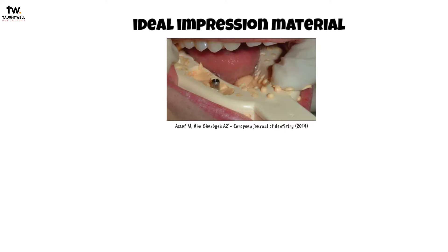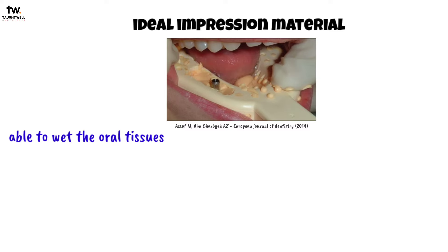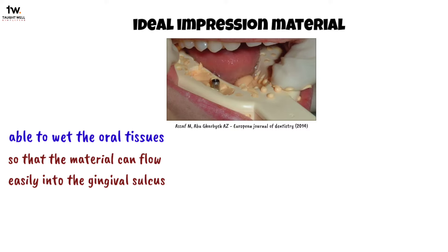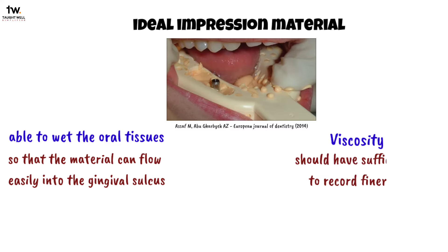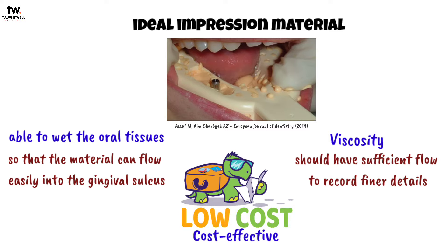The ideal impression material should be able to wet the oral tissues so that the material can flow easily into the gingival sulcus. It should have sufficient viscosity to record finer details, especially the finish line, and the material should be cost effective.